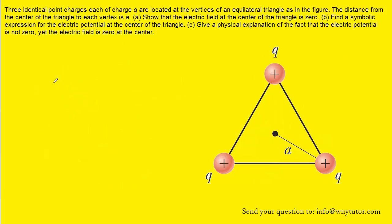Now, for part B, we need to find a symbolic expression for the electric potential. Now, the electric potential produced by a point charge is symbolized by capital V, and it's equal to K times the charge divided by the distance from the charge to the location of interest. Now, in this case, the electric potential produced by this charge right here would equal K times Q divided by the distance from that charge to the center of the triangle, which is marked as being A.